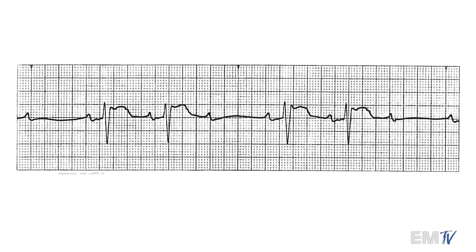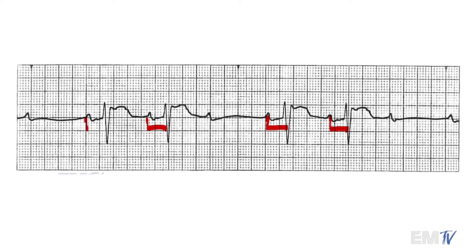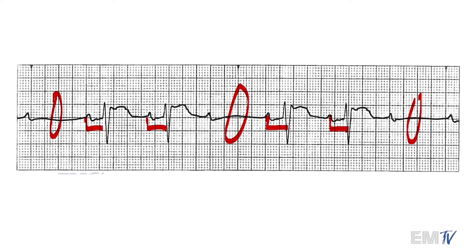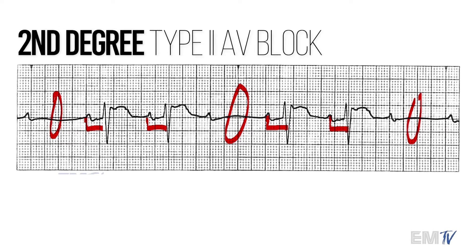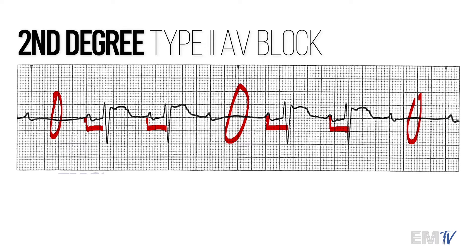As there are two different kinds of second-degree heart blocks, we'll need to look at the PR intervals. These PR intervals — the ones that are connected — the duration does not change. Because you have a fixed PR interval here and a complete drop-off of a QRS complex, my diagnosis of this rhythm would be second-degree type 2, otherwise known as Mobitz II. And again, this is a form of heart block.